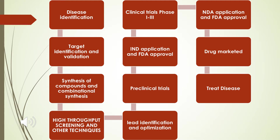The general process from drug discovery to marketing involves the following steps. First, we have to identify the disease — for example, a new treatment for diabetes or hypertension. Then we identify and validate the target: what type of drugs can act for diabetes or hypertension. Then we synthesize compounds either by combinational synthesis or individual synthesis of that particular chemical moiety. Once synthesized, we do the screening by the HTS process. In HTS, we identify the HIT molecules, and from that we identify the lead molecules.